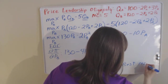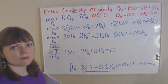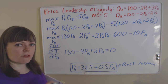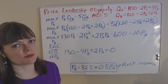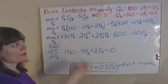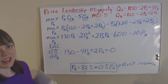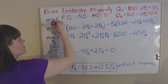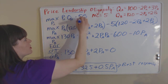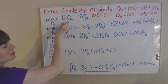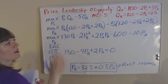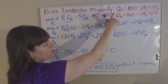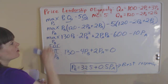This is firm B's best response to what firm A chooses to do in the first round. Firm A knows that firm B is going to behave like this and will take that into account when doing their own maximization problem. So our next step is to set up firm A's maximization problem. It works exactly like firm B's — profit equals price times quantity of firm A minus marginal cost times quantity of firm A — and then we plug in firm A's demand function for quantity.